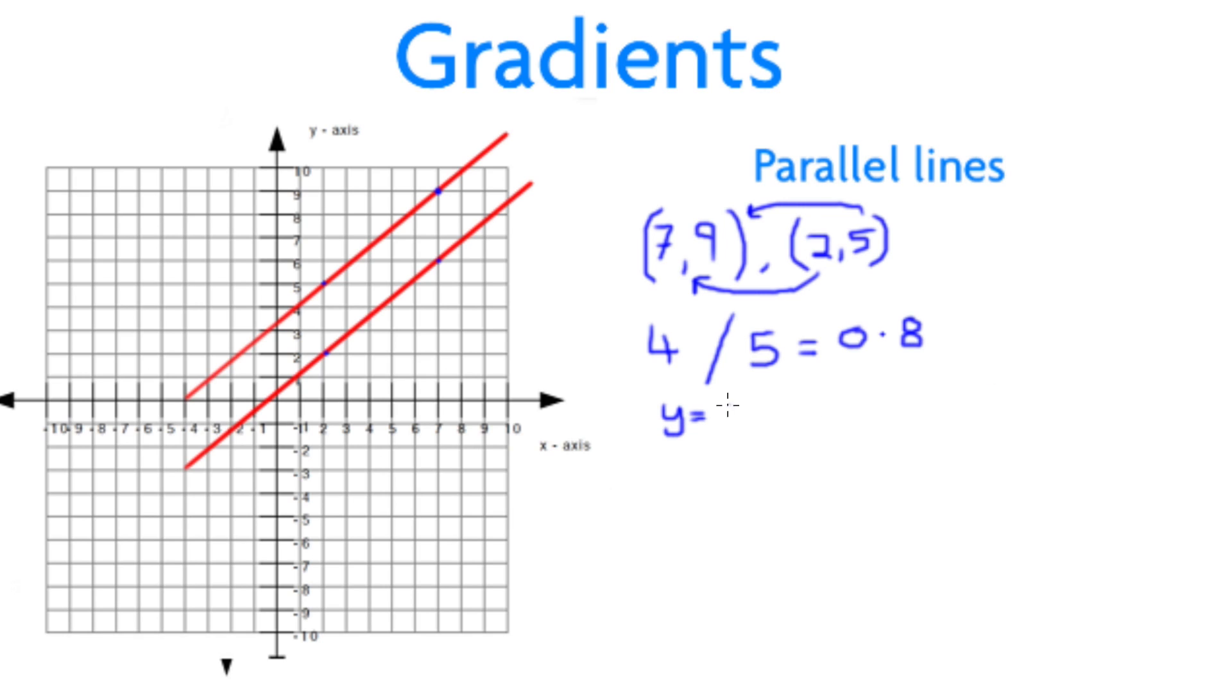So, we know the equation of our line is going to be y equals 0.8x, and we take a look to see where the line crosses the y-axis to see that it touches at 4, so we simply add 4. We repeat this for the second line using the coordinates 7, 6, and 2, 2.